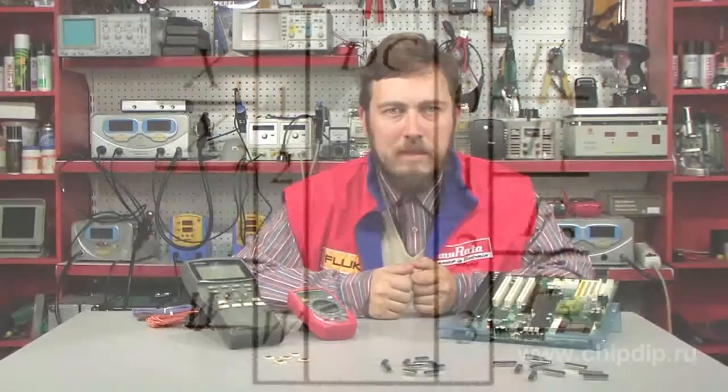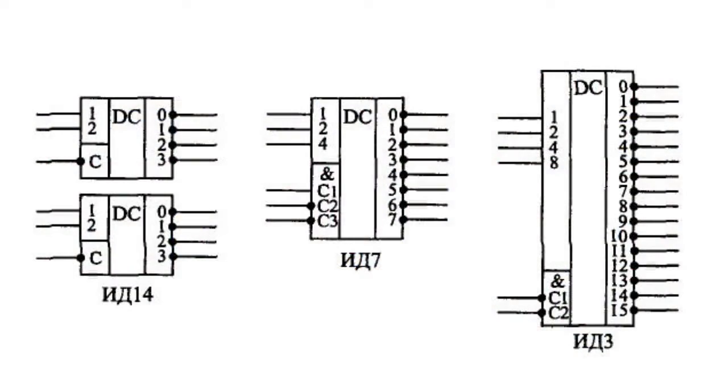Standard products include decoders with 4, 8, and 16 outputs, which corresponds to 2, 3, and 4 digits in the input code.